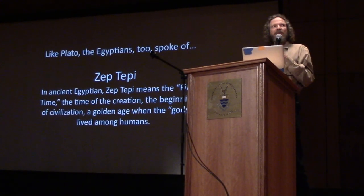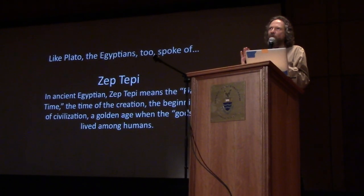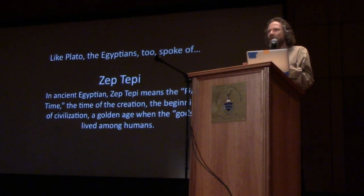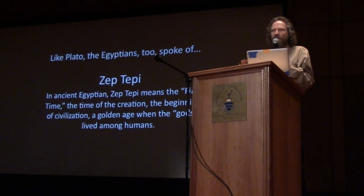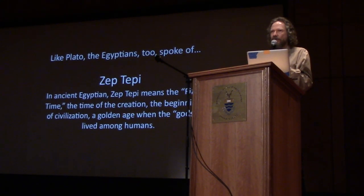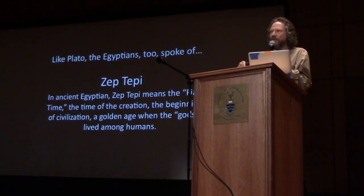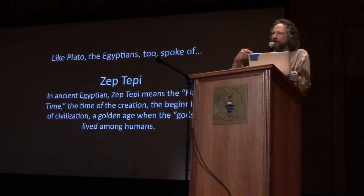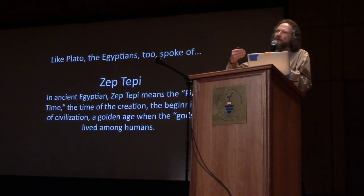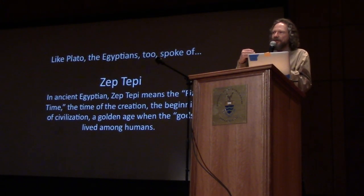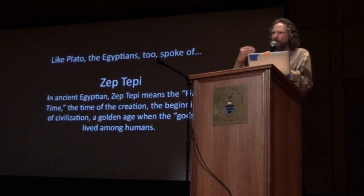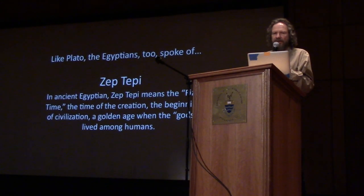So even the dynastic Egyptians, 4500 to 5000 years ago, did not think of themselves as the first civilization. They thought they were an inheritance, a legacy built on from an earlier civilization.